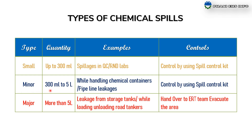The second type is minor: 300 ml to 5 liters in quantity, typically seen while handling chemical containers or pipeline leakages. These are also controlled using the spill control kit. The last type is major: more than 5 liters, such as leakage from storage tanks or while unloading or loading road tankers. If we see these types of spillages, they are handed over to the ER team — the Emergency Response Team — and we have to evacuate the area.